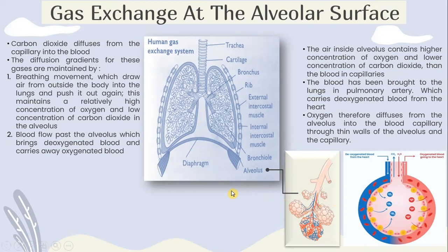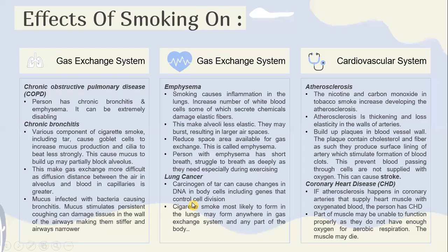The diffusion gradients for these gases are maintained by breathing movements and blood flow. Breathing movements draw air from outside the body into the lungs and push it out again, maintaining a relatively high concentration of oxygen and low concentration of carbon dioxide. Blood flow past the alveoli brings deoxygenated blood and carries away oxygenated blood.